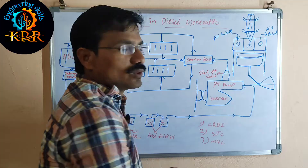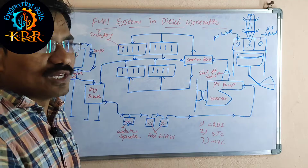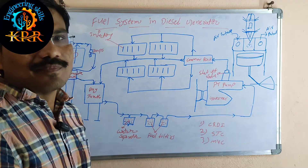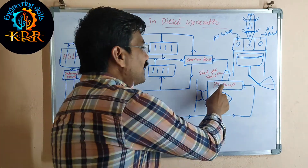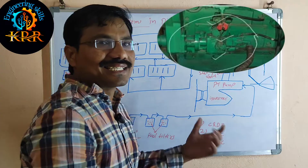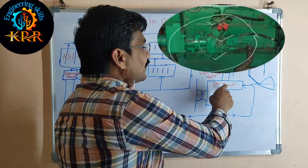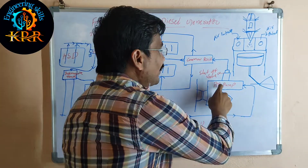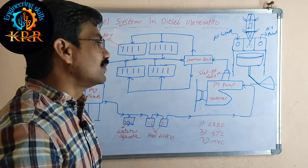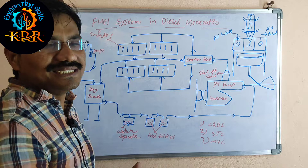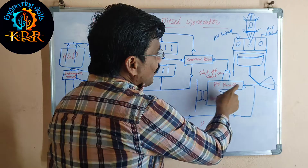The diesel is entering the PT pump. Up to the day tank to the PT pump, the fuel flow is at low pressure, because it is coming only based on gravity. After that, the diesel enters the PT pump. The PT pump is the Pressure Timing pump. This PT pump is internally connected with the camshaft of the engine - through the camshaft and flywheel via gears. The PT pump has no external power supply; it is a gear pump depending on the engine shaft. The PT pump pumps the diesel from input to output.